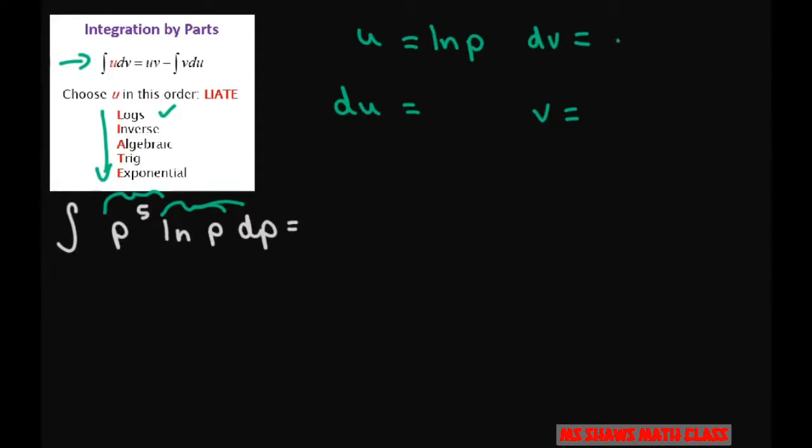Which is p to the fifth dp. All right, so the derivative of u is going to be one divided by p dp, and your v is just going to be an anti-derivative of that, is just one sixth p to the sixth.